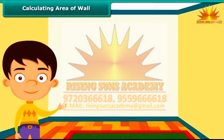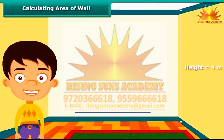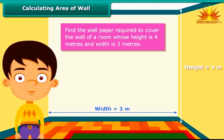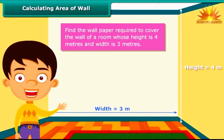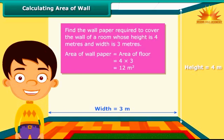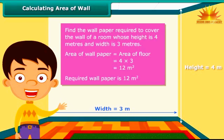Now let us solve a question based on the concept. Each wall of Nidhi's room is 4 meters high and 3 meters wide. She wants to cover one of the walls with wallpaper and wants to know how many square meters of wallpaper will be required. The area of the wallpaper required will be the same as the area of the wall. The area of the wall is 4 meters multiplied by 3 meters, which is 12 square meters. So 12 square meters of wallpaper will be required to cover the wall of Nidhi's room.